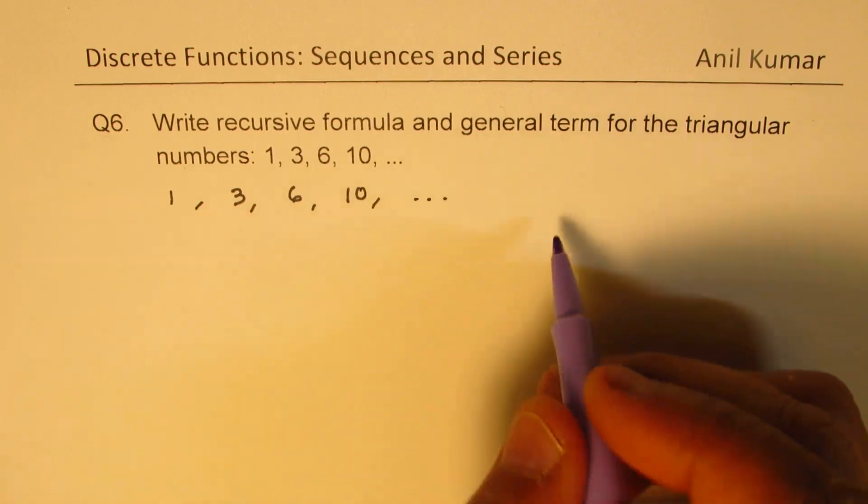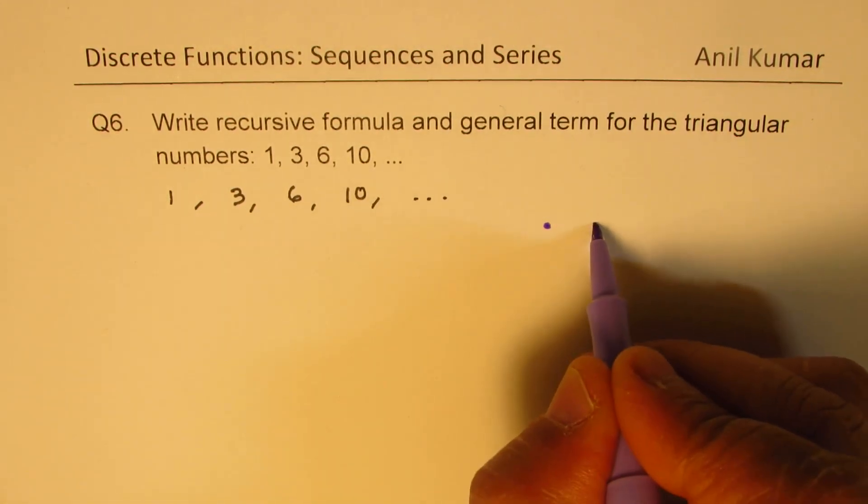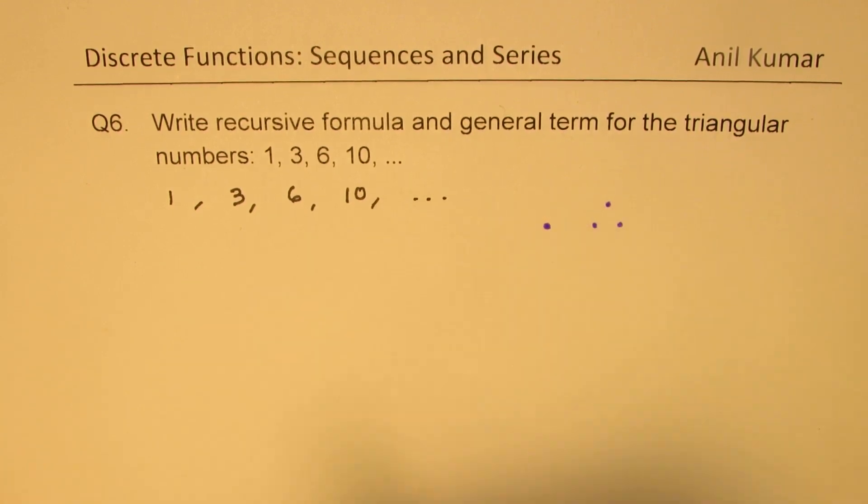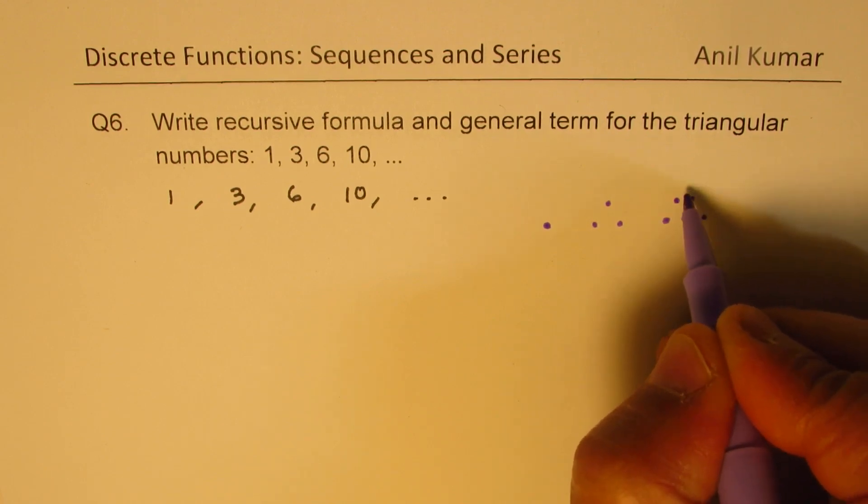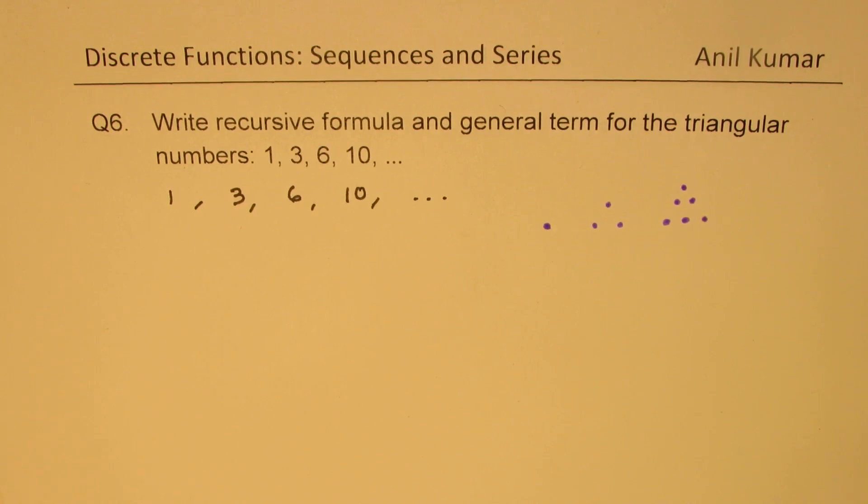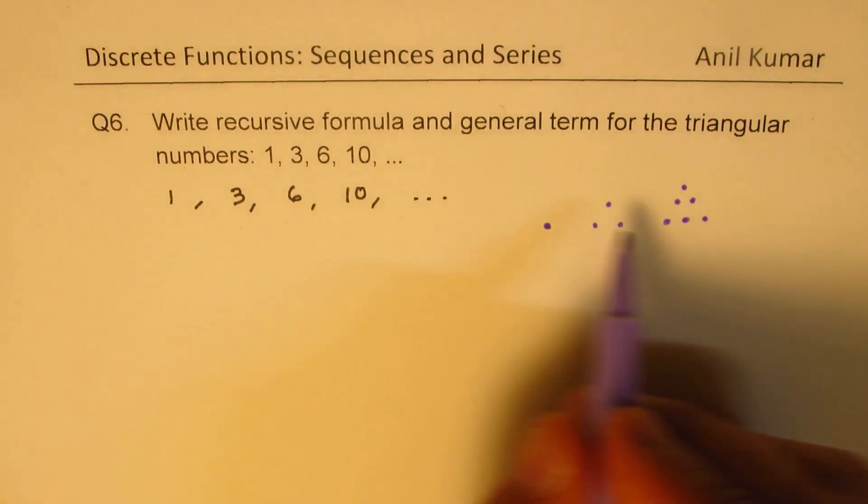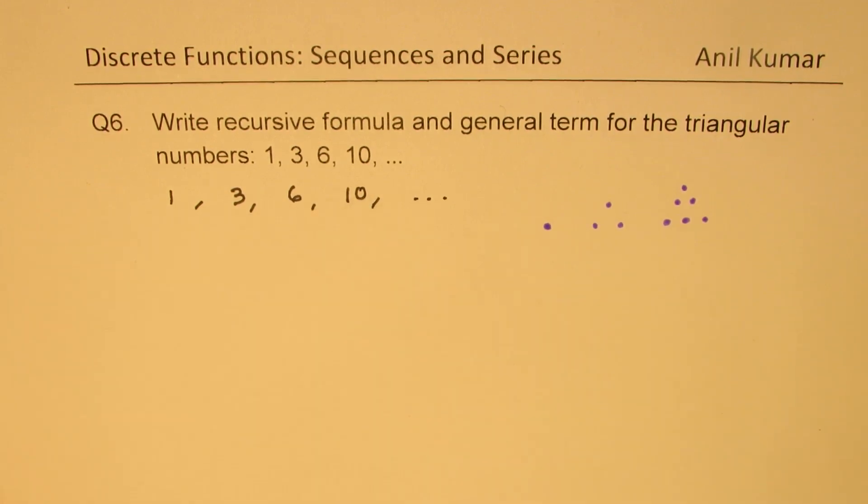If you arrange them, let's say you have one here, then three could be arranged in a triangle. Do you see that triangle? Next stage is to just increase this. What you get here is another triangle and the number of dots on this triangle are six.